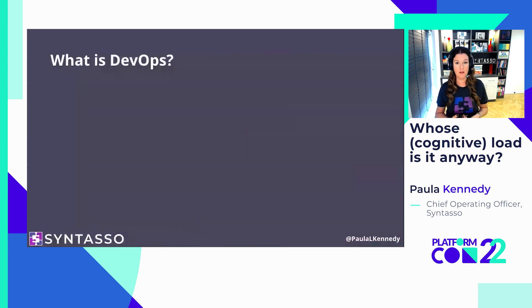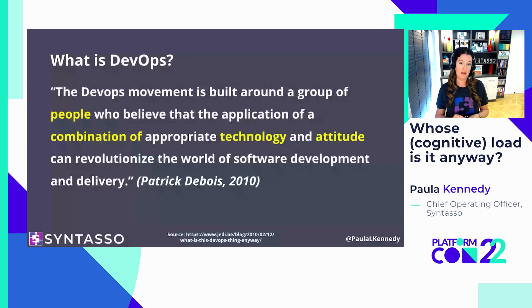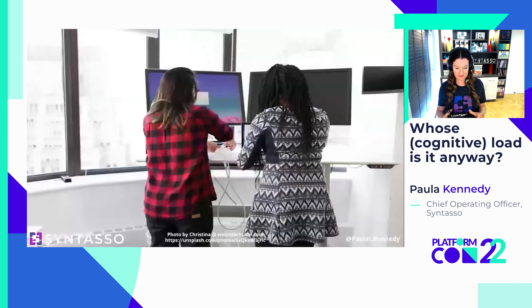To help solve this, we've seen the rise of DevOps over the last 12 years or so. I attended a great meetup from the London DevOps meetup group where an organizer put up three different definitions of DevOps, showing how the term has grown to mean different things to different people. I found a quote from Patrick Debois from early 2010: 'The DevOps movement is built around a group of people who believe that the combination of both technology and attitude can change how we build and deliver software.' For me personally, at its core, it's about bringing developers and operators closer together — often into the same teams — with shared understanding and shared empathy.